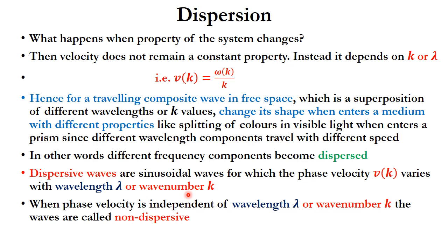When the phase velocity v(k) varies with wavelength or wave number k, the waves are called dispersive. When this velocity v(k) is independent of wavelength or wave number k, the waves are called non-dispersive.